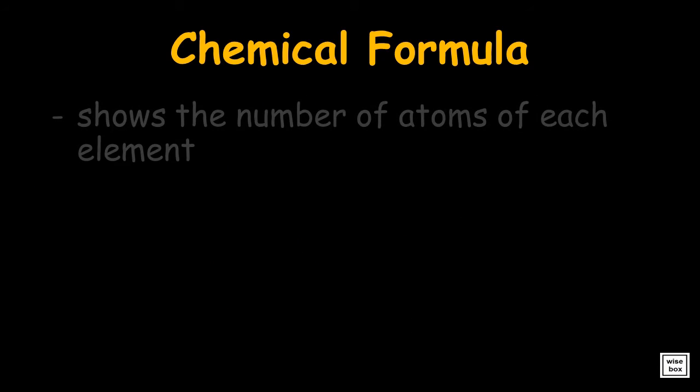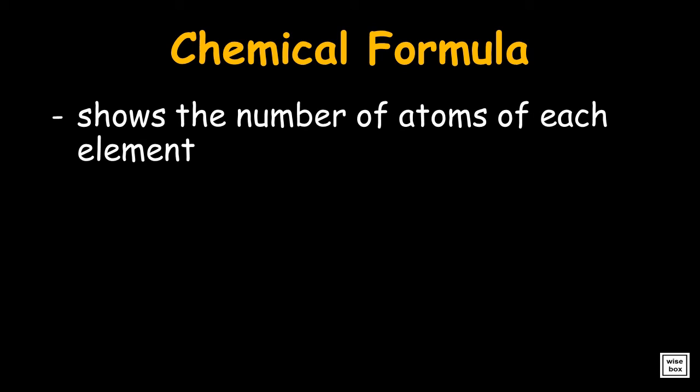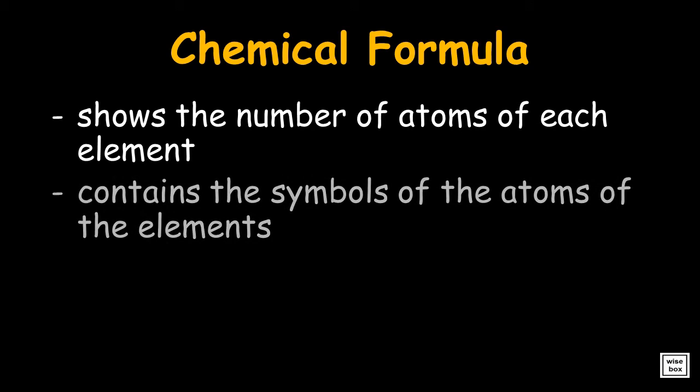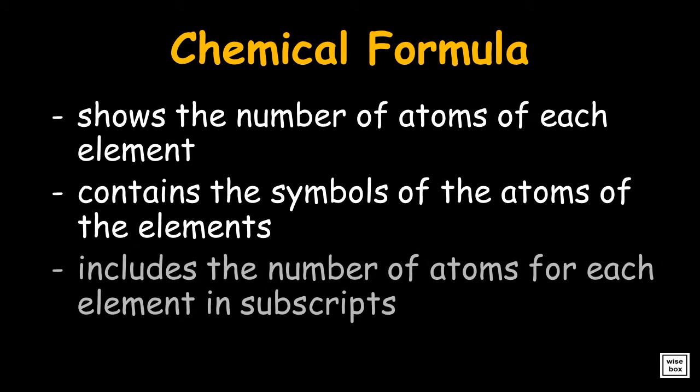A chemical formula tells us the number of atoms of each element in a compound. It contains the symbols of the atoms of the elements present in the compound, as well as the number of atoms for each element in the form of subscripts.